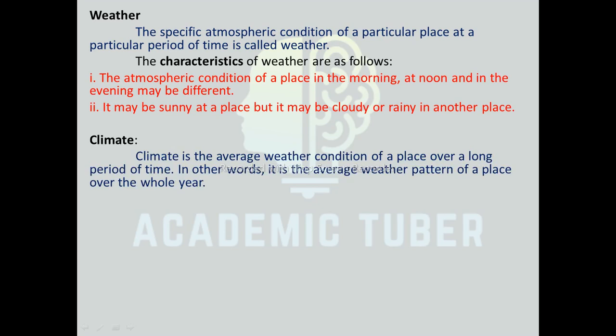Climate. Climate is the average weather condition of a place over a long period of time. In other words, it is the average weather pattern of a place over the whole year. For the climatic average, a minimum period of 25 years is needed. The climate of a particular place is determined with the help of systematic observation, recording, and analysis of various factors such as temperature, rainfall, wind, clouds, sunshine, humidity, atmospheric pressure, etc.